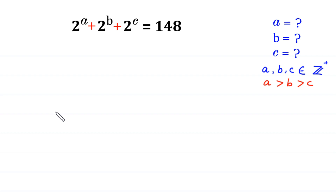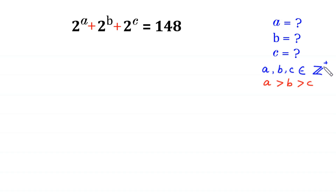Welcome to how to solve this very nice exponential equation: 2 to the power a plus 2 to the power b plus 2 to the power c equals 148. We need to find the values of a, b, and c, where a, b, and c are positive integers and a is greater than b and b is greater than c.